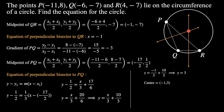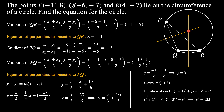We can now write the equation of the circle. With center (−1, 3) we have (x + 1)² + (y − 3)² = r². To find r², we substitute one of the known points — I'll use (4, −7): (4 + 1)² + (−7 − 3)² = 5² + (−10)² = 25 + 100 = 125. So r² = 125, and the equation of the circle is (x + 1)² + (y − 3)² = 125.